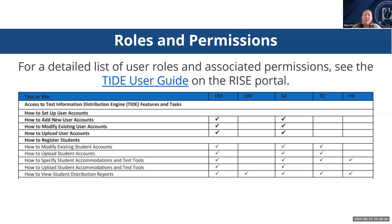Permissions also limit the scope of data access. A district-level user can view and work with data pertaining to the district, the schools associated with it, and individual teachers. A school-level user can only work with data pertaining to that school, or even just their assigned rosters if it's a teacher-level account.